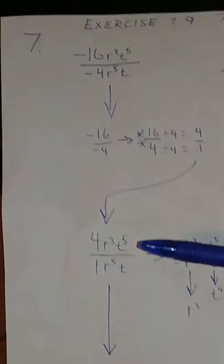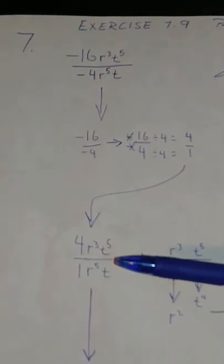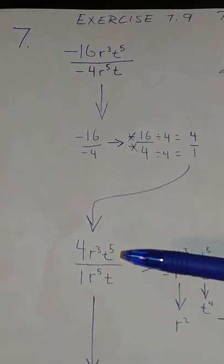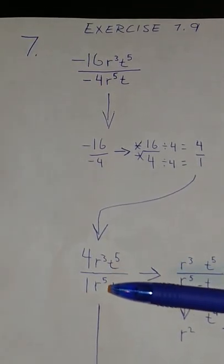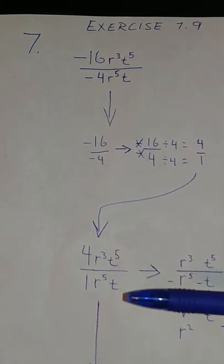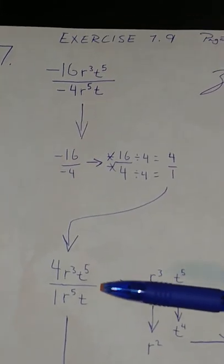Bringing this down with the rest of your problem, you want to find what r to the power of 3 and r to the power of 5, t to the power of 5 and t equal out to.